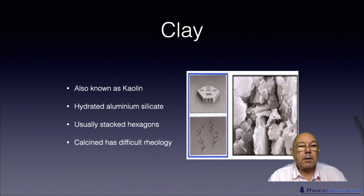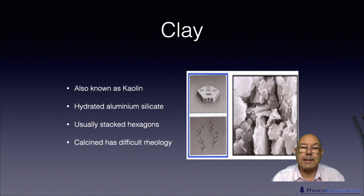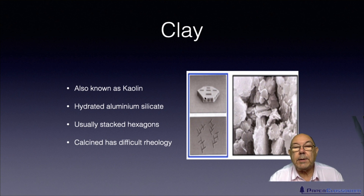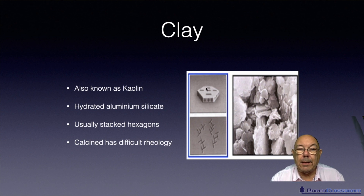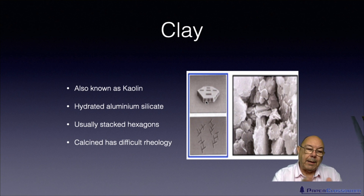So here's clay — some people also call it kaolin. It's an aluminium silicate, whereas talc is a magnesium silicate. It typically exists not as individual hexagonal platelets but stacked, almost like a stack of pancakes. The interesting thing is the surface of the platelet has a negative charge, while the edges of the platelets have a positive charge. Now, if you take that clay and put it through a calcination process — a kiln at high temperatures — those clay platelets fall apart and then fuse together.